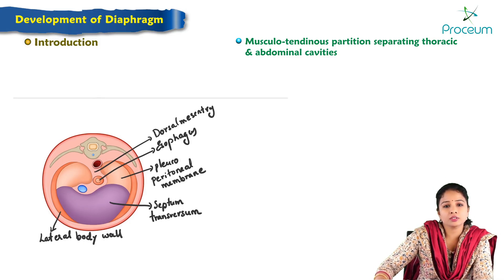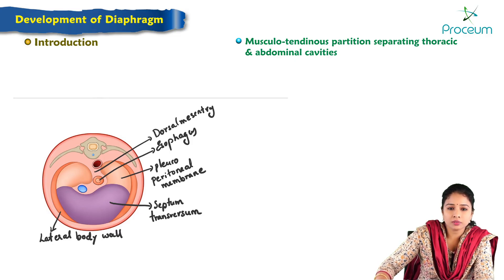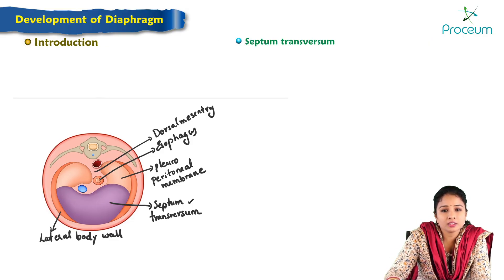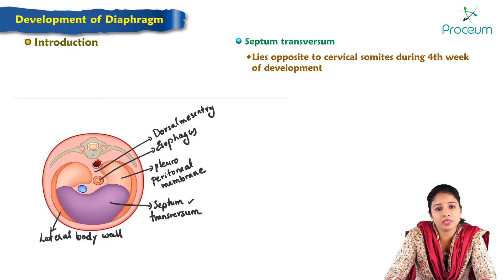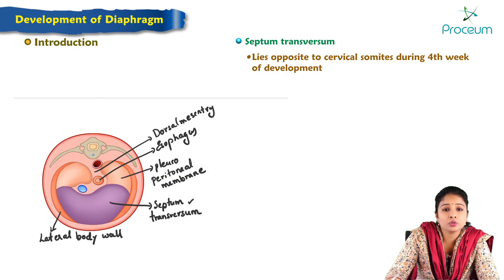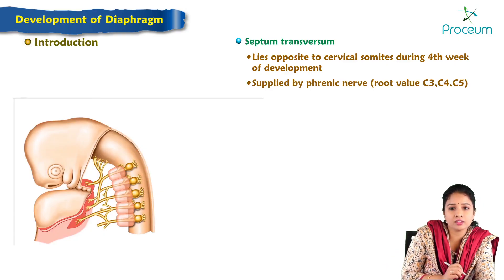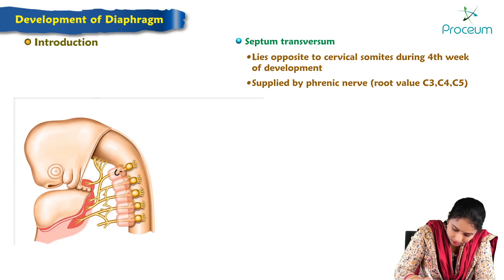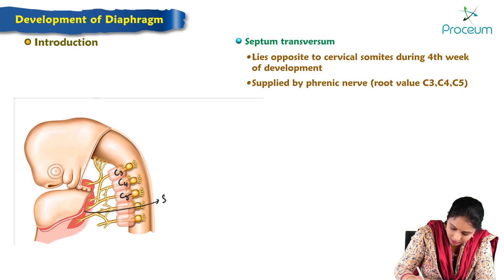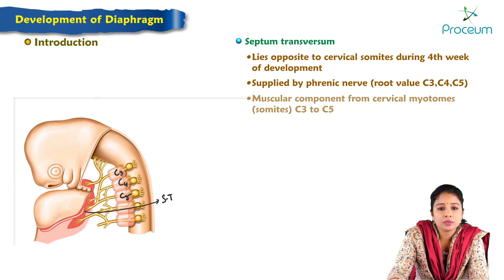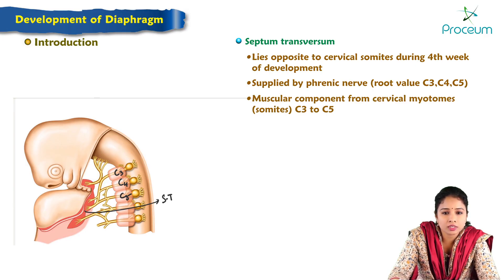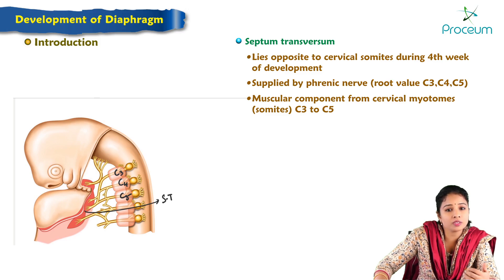These are the sources which give rise to the diaphragm. Regarding septum transversum — its development is from the cervical somites lying opposite to C3, C4, C5. During the fourth week of development, the muscular component of the cervical myotomes, that is C3 to C5, forms the muscular component of the septum transversum.